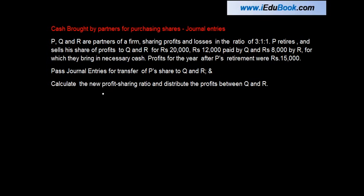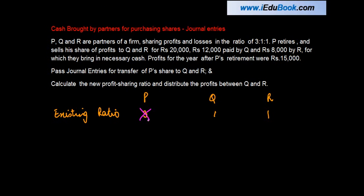Cash brought by partners for purchasing shares. Journal entries: P, Q, and R are partners of a firm sharing profits and losses in the ratio of 3:1:1. Their existing profit sharing ratio is 3:1:1, which can also be written as 3/5, 1/5, and 1/5. P retires and sells his share of profits to Q and R for twenty thousand and twelve thousand.